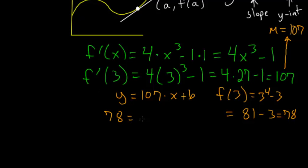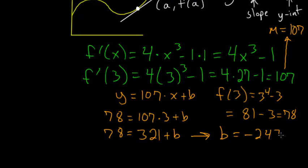So we have that 78 = 107 times 3 + b and 107 times 3 is just 321 + b, this is equal to 78. Subtracting 321 from each side we can figure out that b = -243.